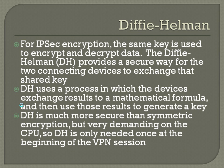Diffie-Hellman is much more secure than symmetric encryption, but very demanding on the CPU — it's asymmetric encryption. But since you're only using it to exchange the key, you only have to do it once at the beginning of the session. Once you've used Diffie-Hellman to exchange that shared secret, you just use that shared secret on each side for symmetric encryption both ways.